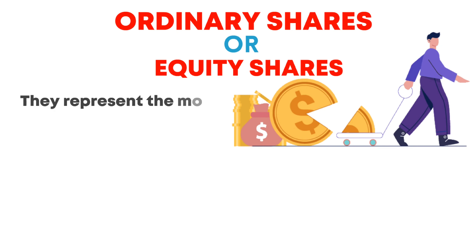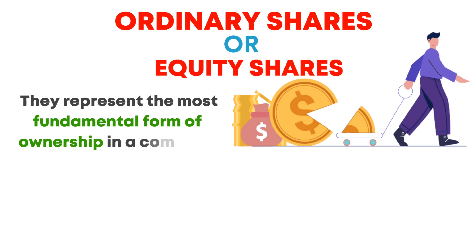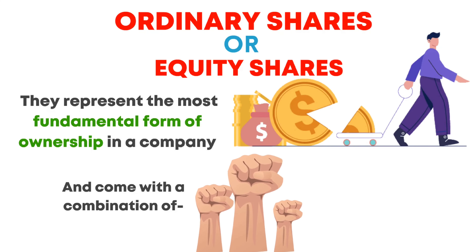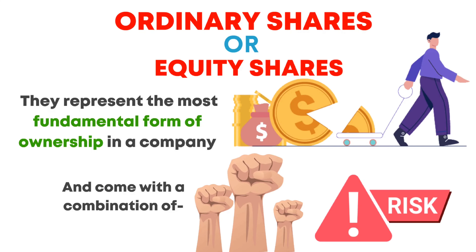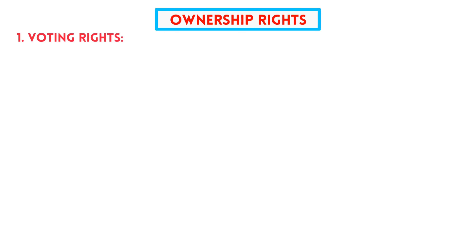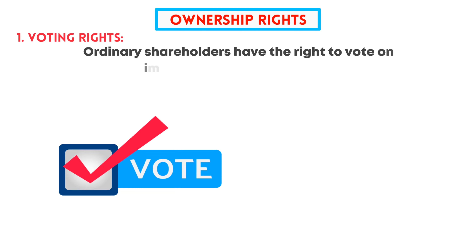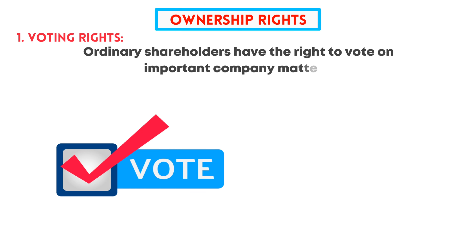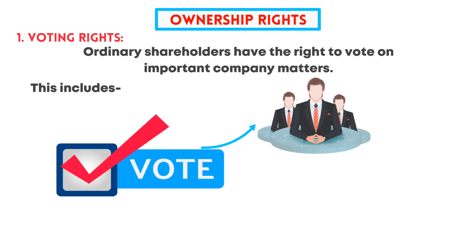Ordinary shares represent the most fundamental form of ownership in a company and come with a combination of rights and risks for shareholders. Here's a detailed breakdown. First, voting rights: ordinary shareholders have the right to vote on important company matters, including electing board members.